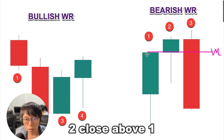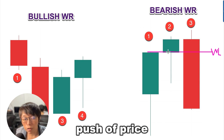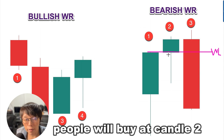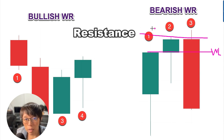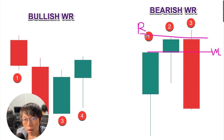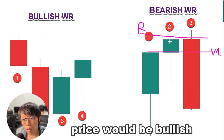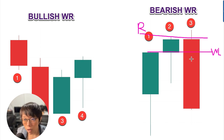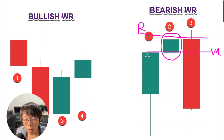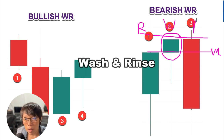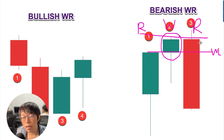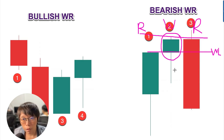What is the meaning of candle two closing above candle one? This means there was a push of price above candle one — people were buying at candle number two — but somehow at candle number two it hit into a resistance. If price continued to move up, it would naturally be bullish. But if price closed back below the wash line, then whoever bought at candle two on the breakout above candle one would be washed and rinsed. Wash and rinse means that candle number two is more like a fake move.